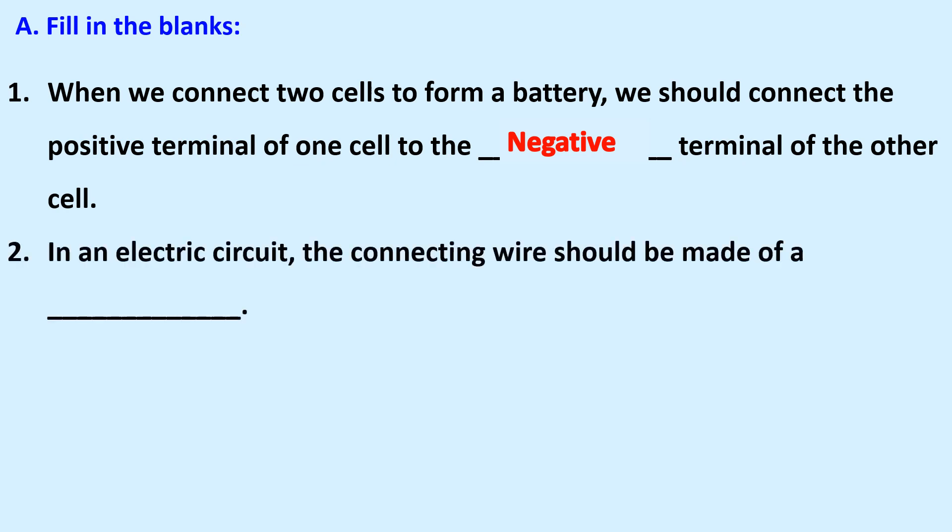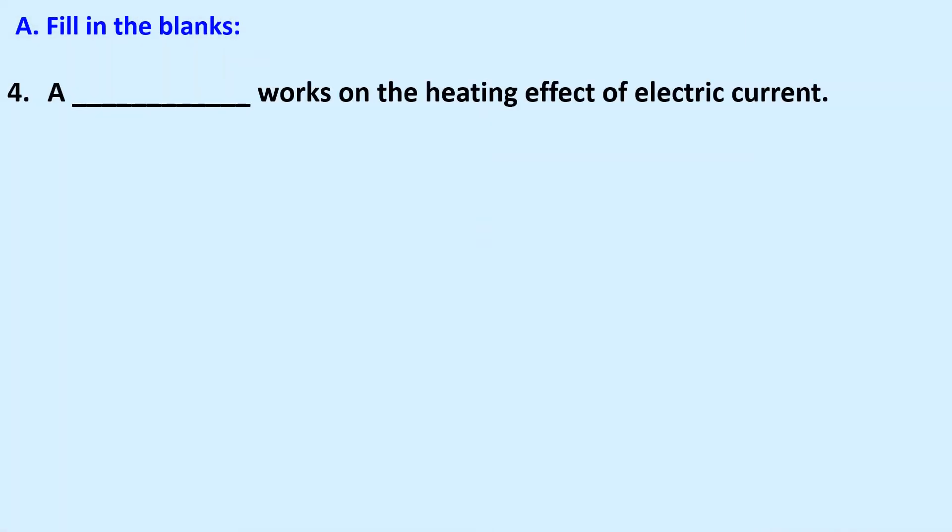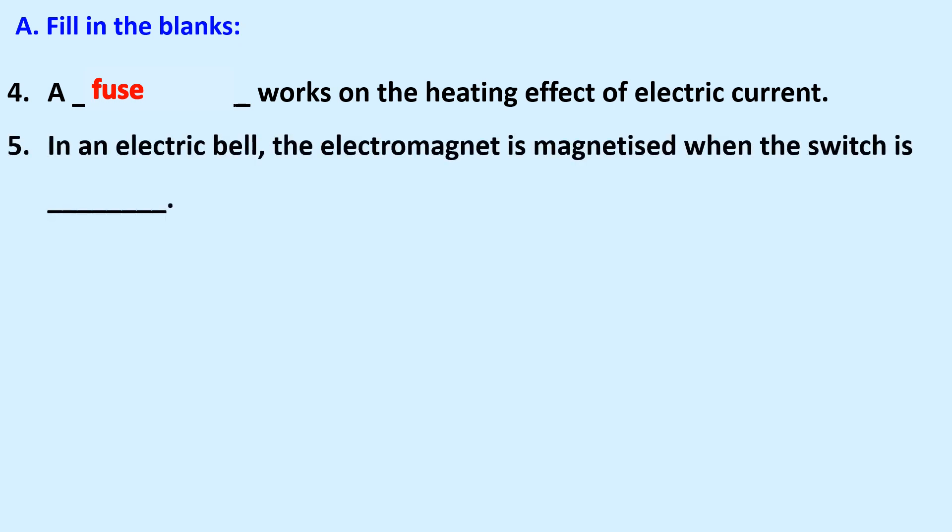Negative. In an electric circuit, the connecting wire should be made of a conductor. A device that is used to open or close an electrical circuit is called a switch. A blank works on the heating effect of electric current. Fuse. In an electric bell, the electromagnet is magnetized when the switch is on.